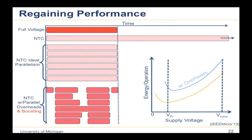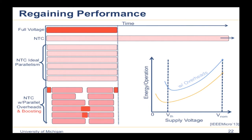Another technique is voltage boosting: rather than improving everything equally by raising voltage, target the specific portions causing parallel overhead — the startup, closing, and barrier code. If we boost those cores to full voltage and get through them quickly, we return faster to the near-threshold energy-efficient mode. This shifts the energy curve down and to the left. In IEEE Micro 2013, we ran a whole suite of parallel applications — Department of Energy exascale proxy applications, plus traditional SPLASH and PARSEC benchmarks — to quantify this.